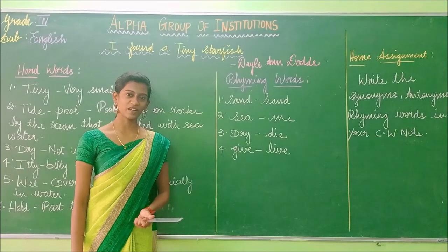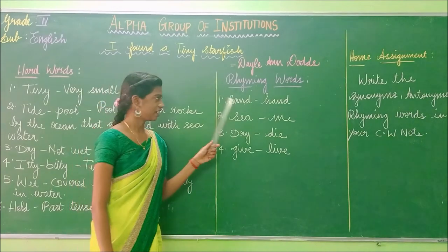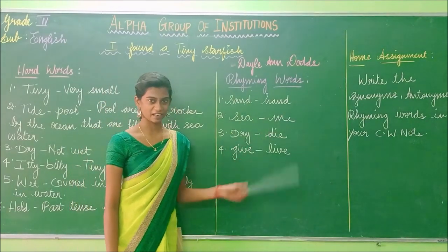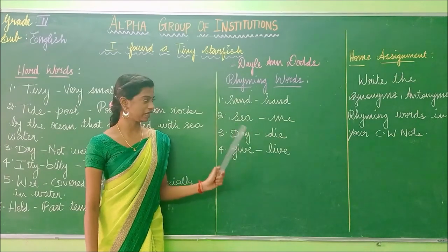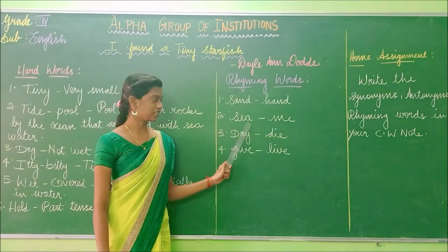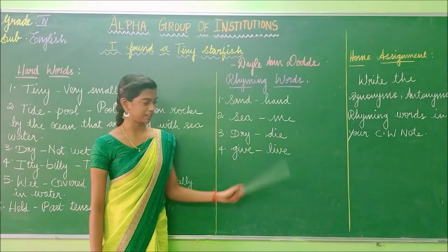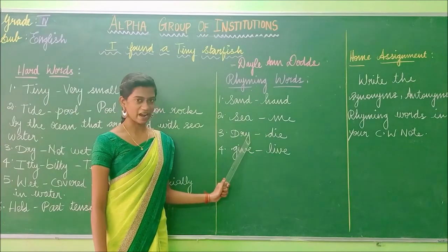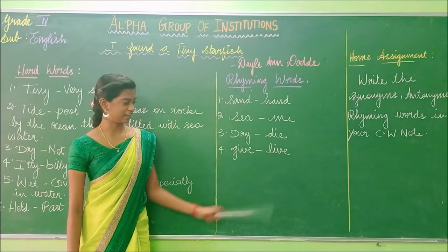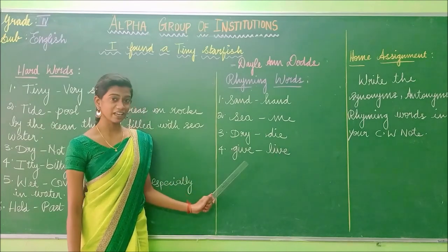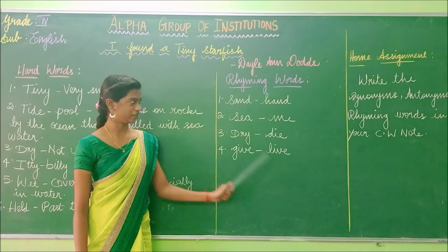Now let us see the rhyming words. Sand and hand — sand, hand. See and me — see, me. Dive and drive — dive, drive. Give and live — give, live.